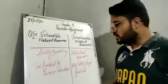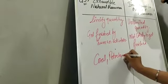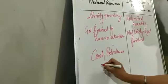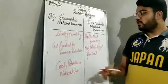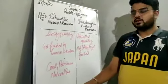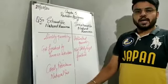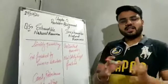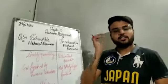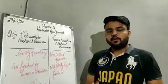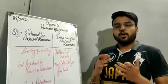Now let us see some examples of exhaustible natural resources. We have all the fossil fuels: coal, petroleum, and natural gas. These are examples of exhaustible natural resources. They are present in limited amount and they can get finished by use from human beings.